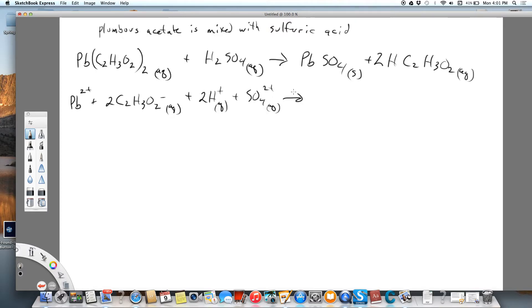So everything is ions on the left, now on the right, we're going to write PbSO4 together, because it is a precipitate, and then acetic acid also stays together.